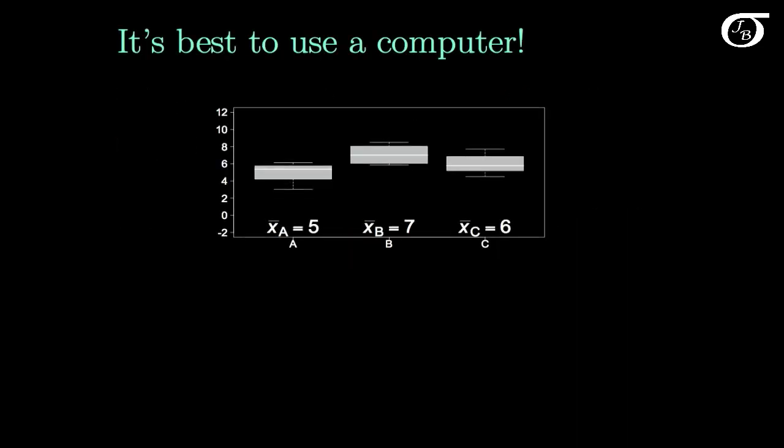Although it's possible to do the calculations by hand, it's typically best to use a computer. If we look at our ABC example from earlier, the ANOVA table looks something like this. This is the output from the statistical computer package R, but other statistical computing packages have very similar output.